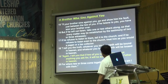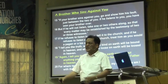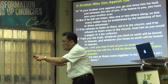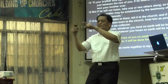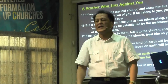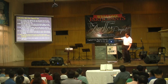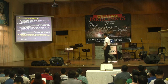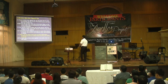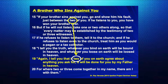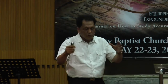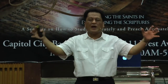If your brother sins against you, go and show him his fault — it is the one who's offended who takes the initiative to be reconciled. Just between the two of you. If he listens, you have won your brother over. But if not, take one or two others along. So in verse 19, 'if two of you on earth agree' — who are these two? The offended and the offending party.